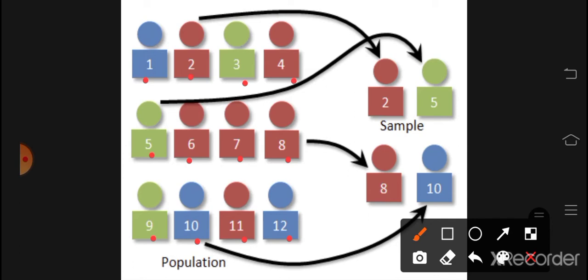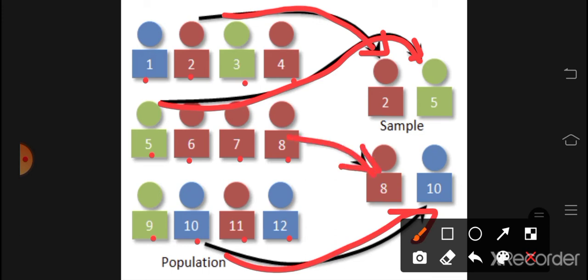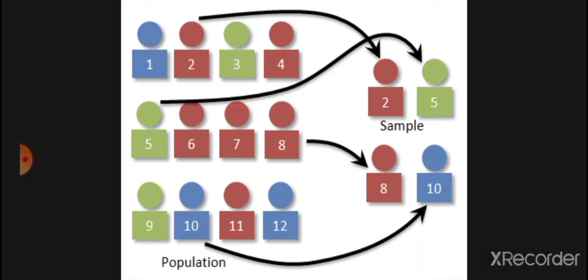The sampling frame is the population, and we give every member a number. Using the table of random numbers, everyone has a chance to be selected. For example, numbers 2, 5, 8, and 10 might be the lucky ones — it is not a fixed routine. Everyone has an equal chance. This is simple random sampling.